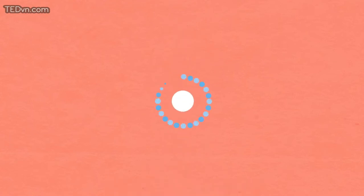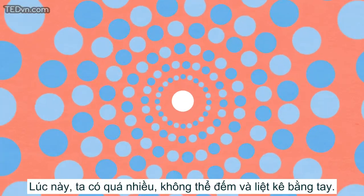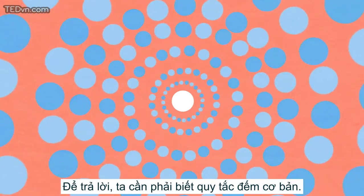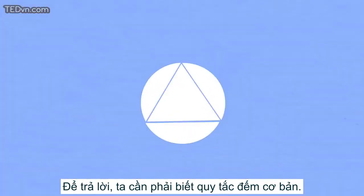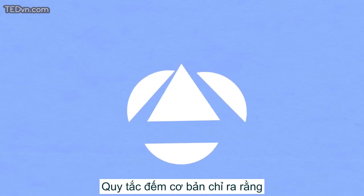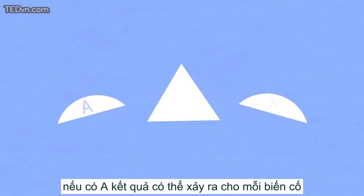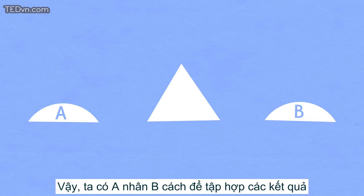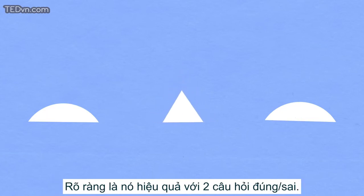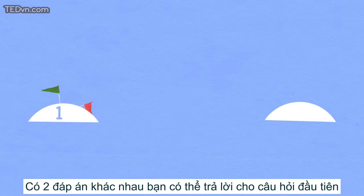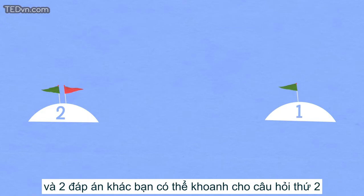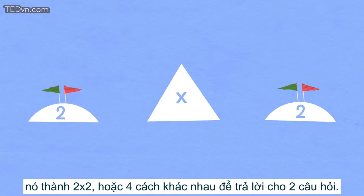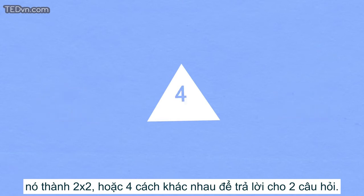What about a 10-question quiz? Well, this time there are too many to count and list by hand. In order to answer this question, we need to know the fundamental counting principle. The fundamental counting principle states that if there are a possible outcomes for one event and b possible outcomes for another event, then there are a times b ways to pair the outcomes. This works for a two-question true-false quiz: there are two different answers for the first question and two for the second, making two times two, or four different ways to write the answers.